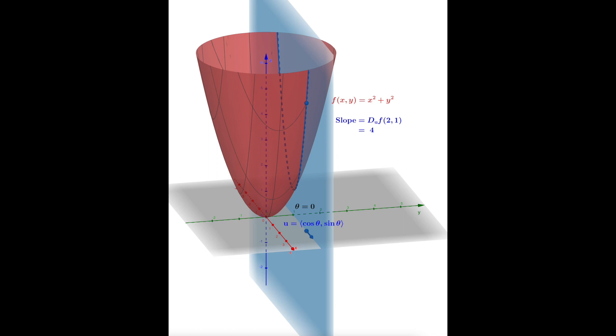u is a unit vector written as a function of theta, so the i component is cosine of theta and the j component is sine of theta. Here theta runs from 0 to 2π. What u does is it determines the direction we're looking when we ask: what is the rate of change in this paraboloid f at that point (2, 1)?